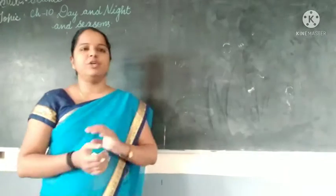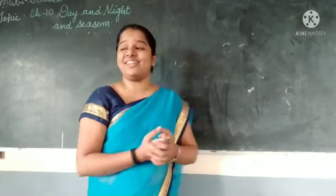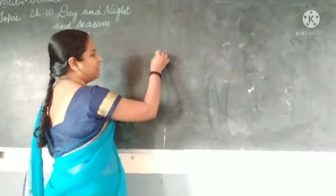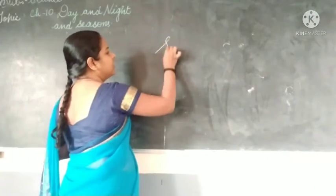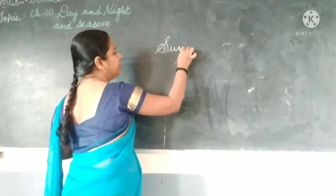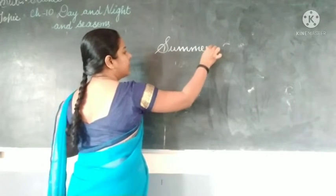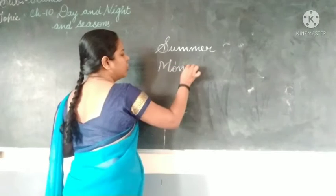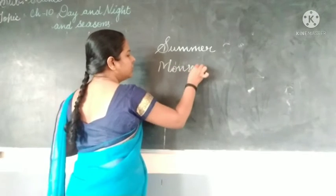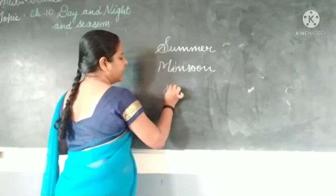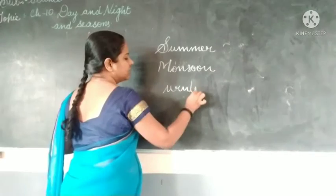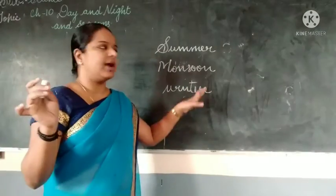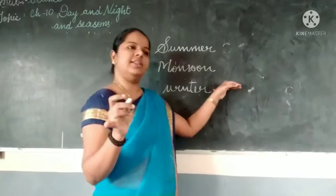Today we are going to see how the different seasons occur. We all know what the different types of seasons are — summer, monsoon, winter, spring, and autumn.